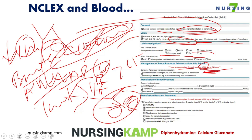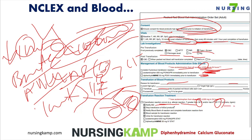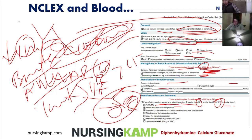For a transfusion reaction: notify the doctor, stop the transfusion, notify the blood bank, obtain blood sample and urine cultures. For allergic reactions: diphenhydramine (Benadryl) and Tylenol. Temperature rise of one degree Celsius (greater than 38°C), urticaria, rigors — these are reaction indicators. Stop transfusion, notify blood bank, obtain cultures. Your goal now is to practice blood transfusion questions focusing on timing and type of reaction.